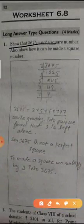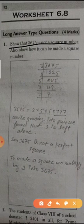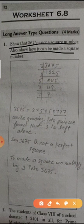Show that 3675 is not a square number, and how can we make a square number. So first we find the prime factor of 3675.